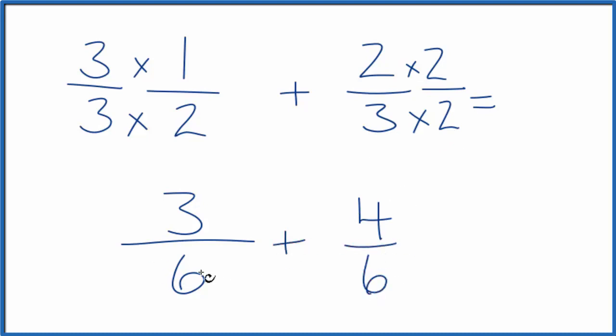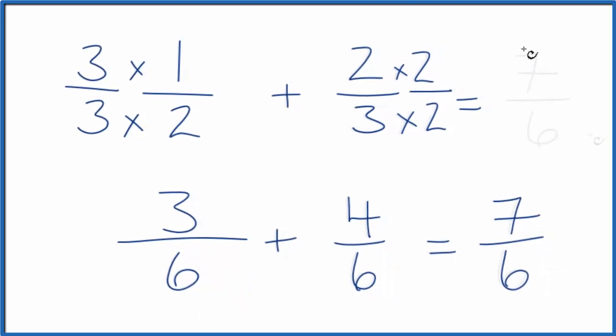So I have the same denominator here, and now I can just add the numerators. Three plus four is seven, and then we bring the six across. Seven-sixths. So one-half plus two-thirds, that gives you seven-sixths.